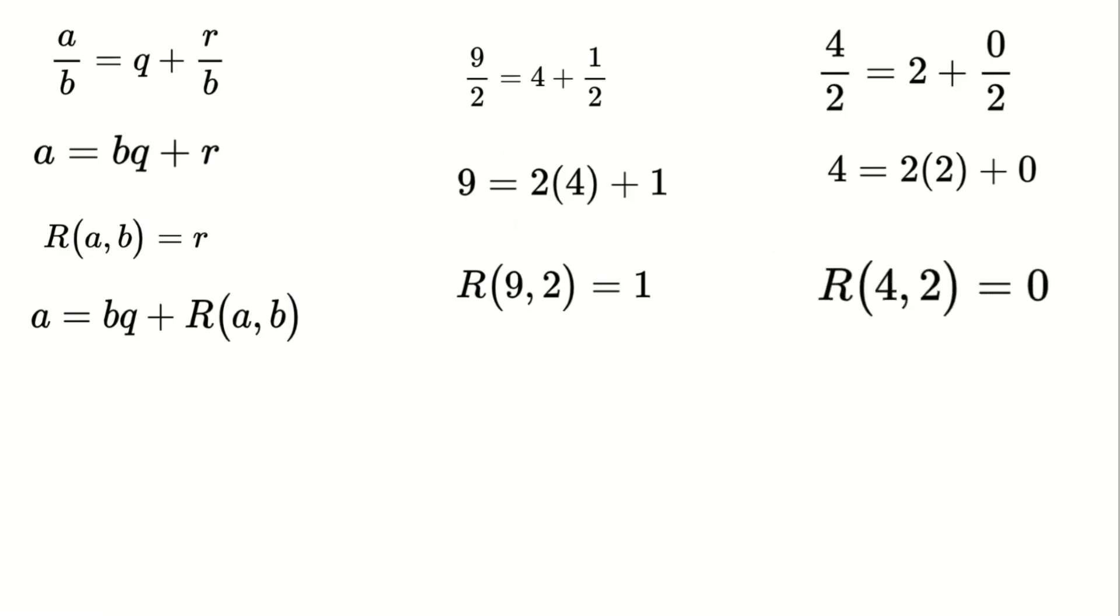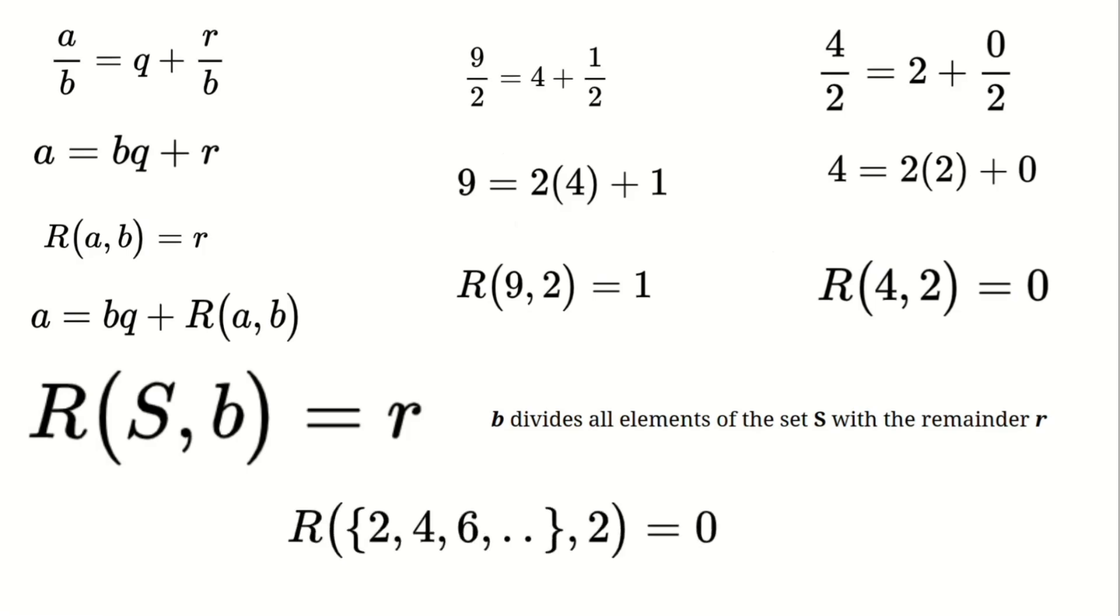We can also apply this notation to sets. If we have a set of numbers and a number b divides all elements of that set with the same remainder, we can say that the remainder of the set and b is equal to that remainder. For instance, if we take the set of even numbers and divide them by two, we always get a remainder of zero. Therefore, we can say that the remainder of the even numbers set and two is zero. Now that we understand this new remainder notation, let's move on to the final chapter, where we will introduce the general formula for prime numbers.